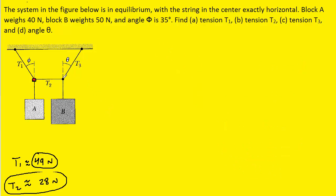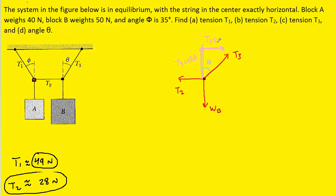To solve the rest of the question, we examine the forces acting at the second junction of three ropes and draw a similar free body diagram. We have T3 pointing up and to the right, the weight of block B pulling straight down on that junction labeled WB, and tension T2 pulling to the left. T2 and WB point along the x or y axes, so it is T3 that we need to break into components. We draw in the angle theta, then the component pointing straight up — T3 cosine of theta — and the component pointing straight to the right — T3 sine of theta. We then remove the resultant T3 and work only with the components.